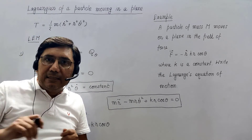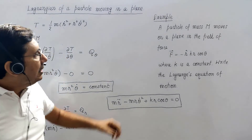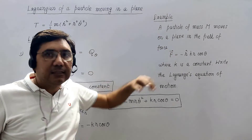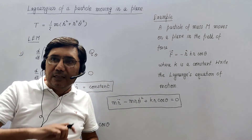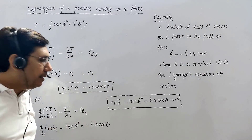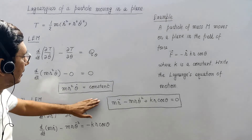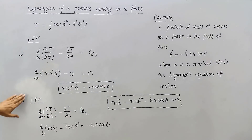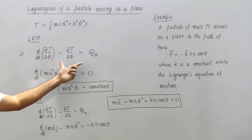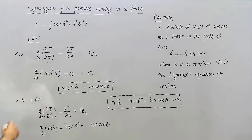So in this concept we have learned how to write down Lagrangians in polar coordinates, and then, when the force acting on a particle moving in a plane is given, how to find the equations of motion. We used the alternative form of Lagrange's equation of motion in terms of kinetic energy and generalized force.